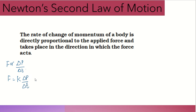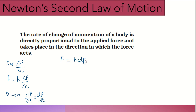The rate of change of momentum means small change in momentum divided by small change in time. When delta T tends to zero, delta P by delta T becomes dp divided by dt — the derivative of momentum with respect to time. So F equals constant K into dp by dt. Since momentum P equals mass into velocity, F equals K into d by dt of mv.